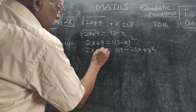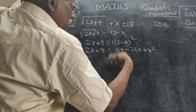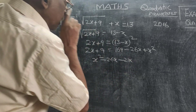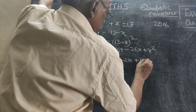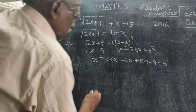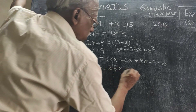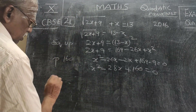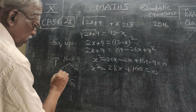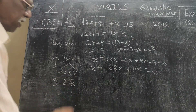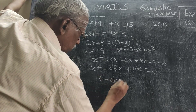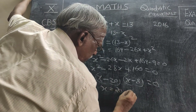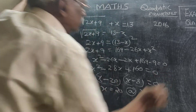Since there is an x² term, I take everything to one side. So we get x² minus 26x, and then the 2x becomes minus 2x, and 169 minus 9 gives us x² minus 28x plus 160 equal to 0. Product is 160, sum is 28 — 20 and 8 — so this factors as (x−20)(x−8) equal to 0, giving x=20 or x=8.